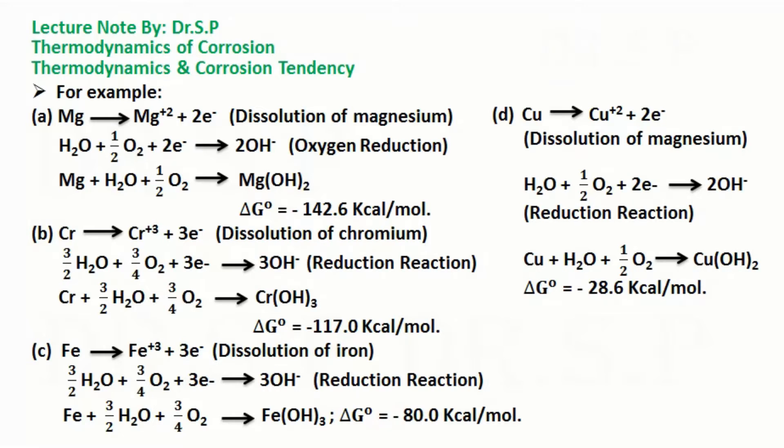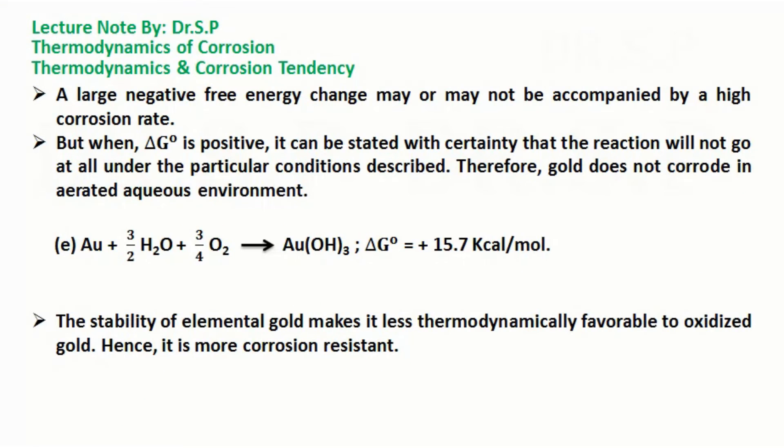the corrosion of magnesium, chromium, iron, and copper spontaneously occurs because in all cases change in free energy is negative value. However, the tendency to corrosion is not a measure of the corrosion rate in the given environment.